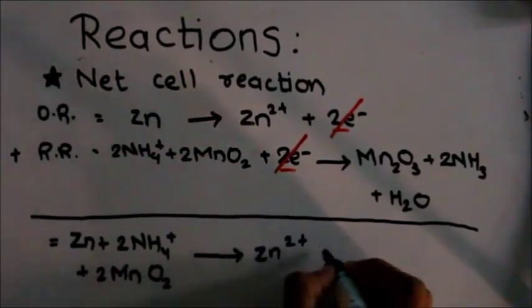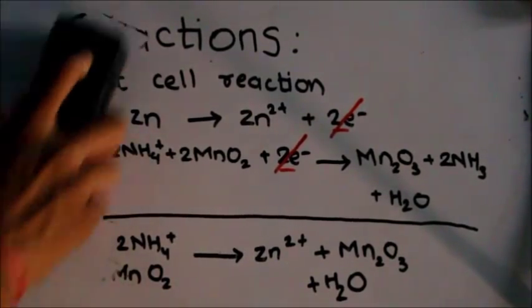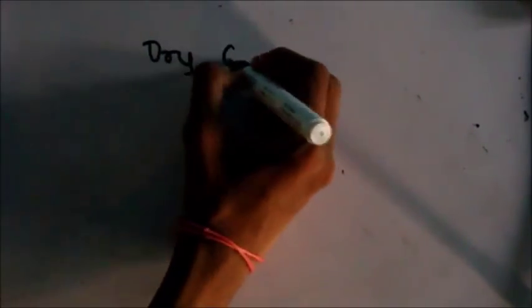The net cell reaction is Zn + 2NH4⁺ + 2MnO2 → Mn2O3 + 2NH3 + H2O. This is how a dry cell works—it generates 1.5 volts.